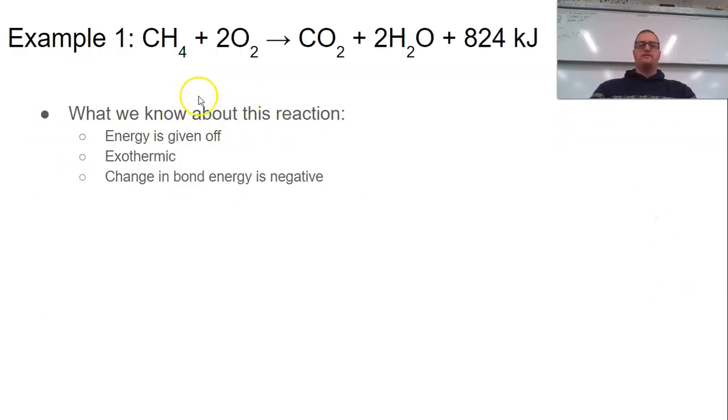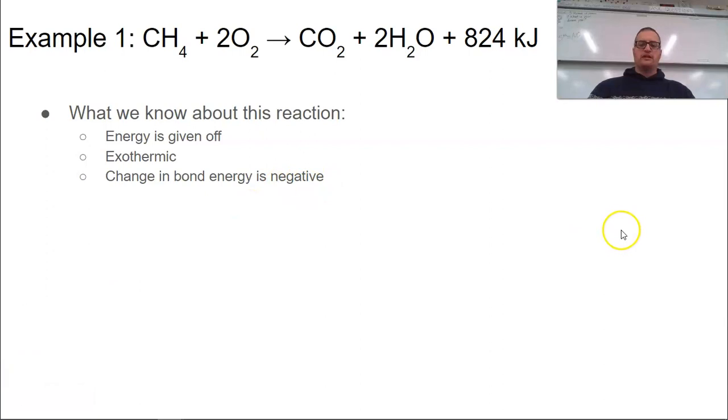So here's an example of a chemical reaction. A simple combustion releasing energy. You can see we have energy in kilojoules on the product side, which means it's made. Energy is given off to the surroundings, meaning it's exothermic because it's on the product side. The change in bond energy will be negative. So let's look at a couple ways we can model this because a model is just a representation of the real thing. You can represent this a couple different ways.